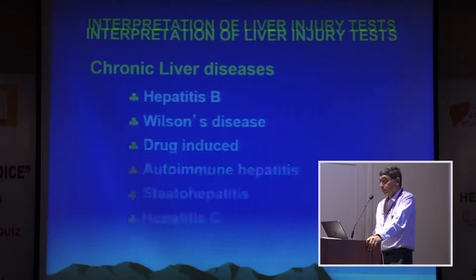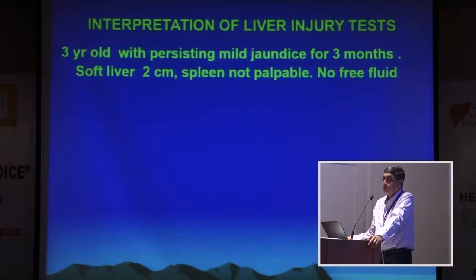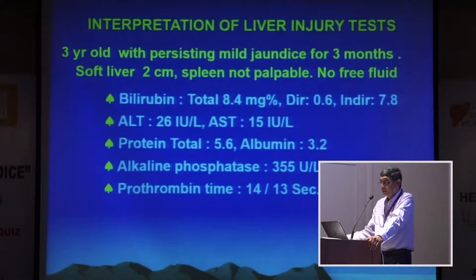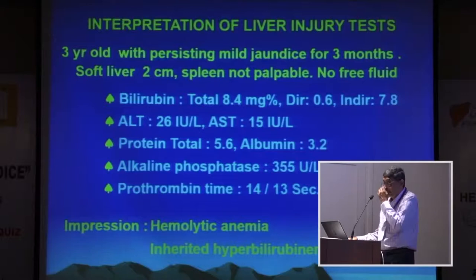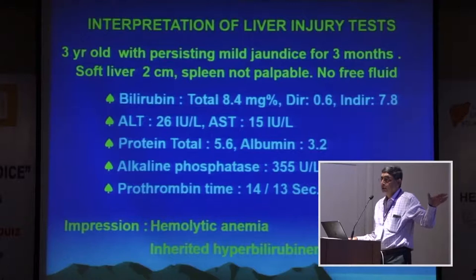A three-year-old child with persisting mild jaundice for three months, soft liver two centimeters, spleen not palpable, no free fluid. Bilirubin 8.4, direct 0.6; ALT 26; AST 15; albumin 3.2; ALP 355; INR 1.08. This is hemolysis — hemolytic anemia, possibly inherited. This child had an inherited hyperbilirubinemia, Gilbert syndrome. This is a common situation where people keep repeating ultrasound after ultrasound. Don't do that — this is inherited hyperbilirubinemia and a hemolytic pattern of presentation.